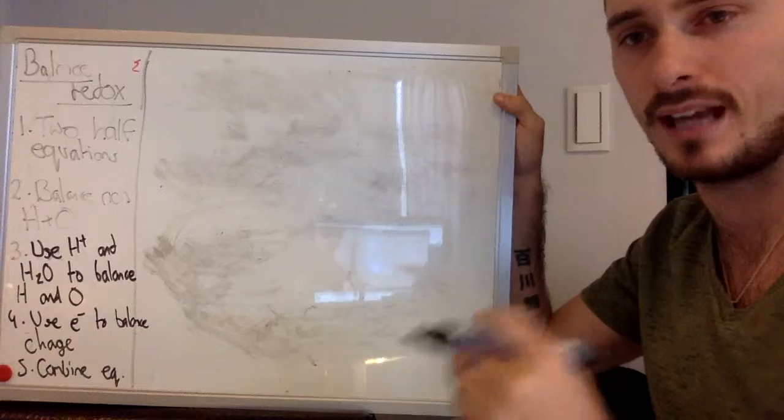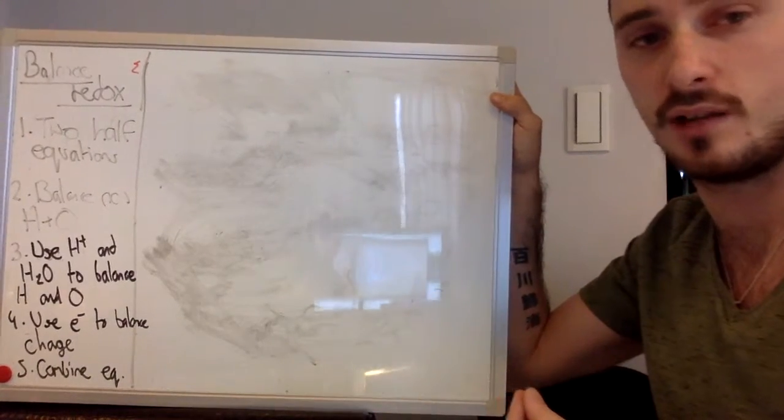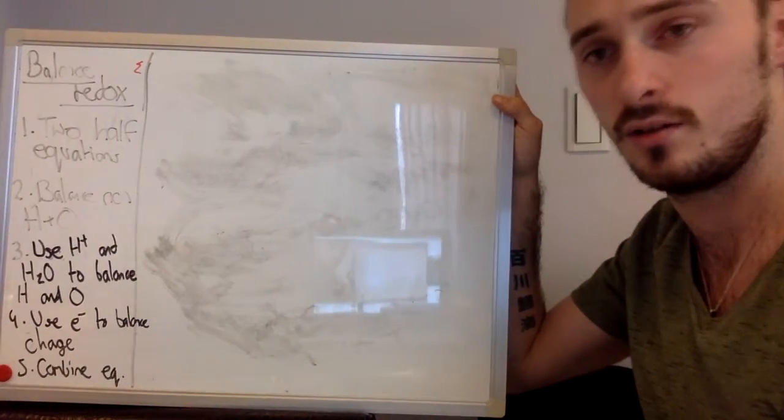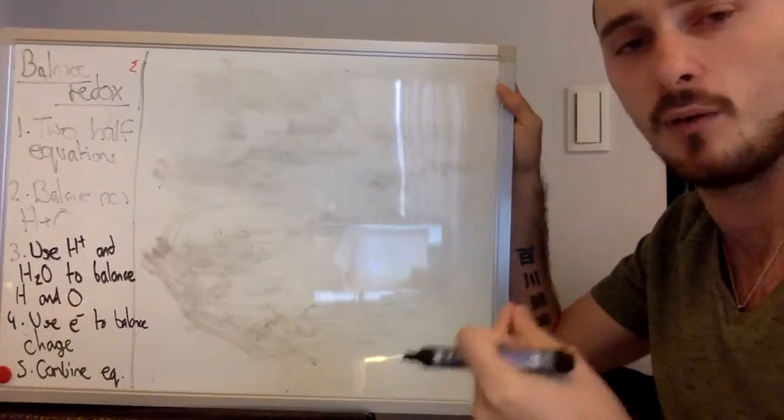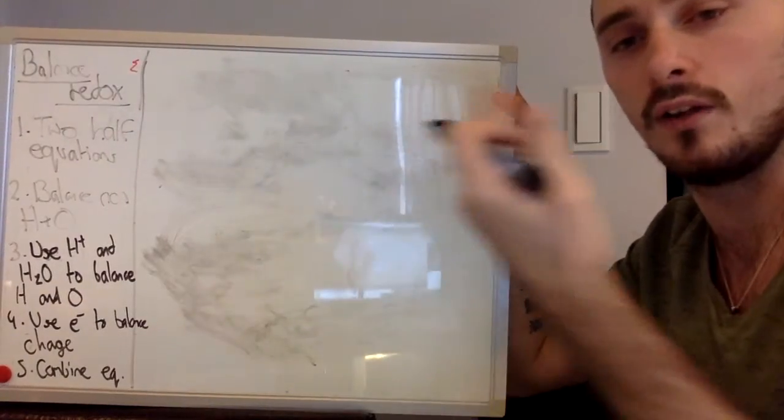Remember that H plus and OH minus exist in pure water as is, but it's a very small concentration. So we often add amounts of acid to have an acidic condition, or add amounts of base, OH minus, to make a basic condition, and that helps to make redox reactions faster, because redox reactions need the transfer of electrons.